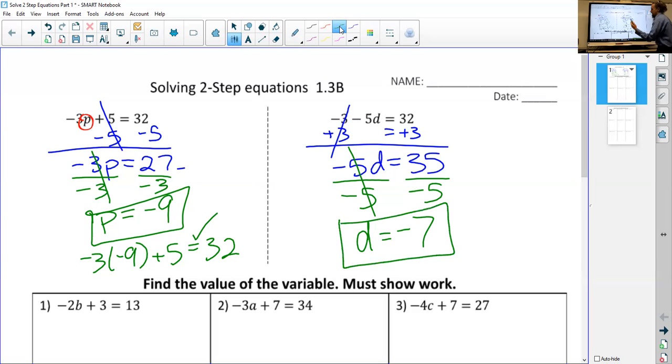That looks good. Let's double check just to be sure. So we have negative three minus five times negative seven equals 32. We just substituted that value back into the original equation. This is 35. A negative times a negative is positive. So does negative three plus 35 equal 32? Yes, it does.